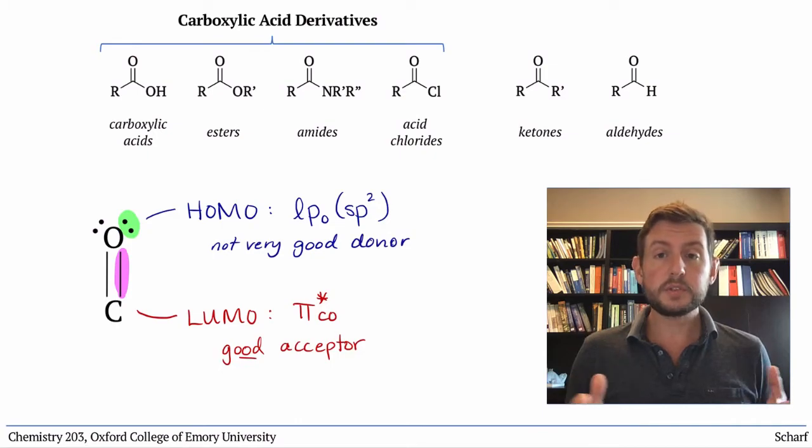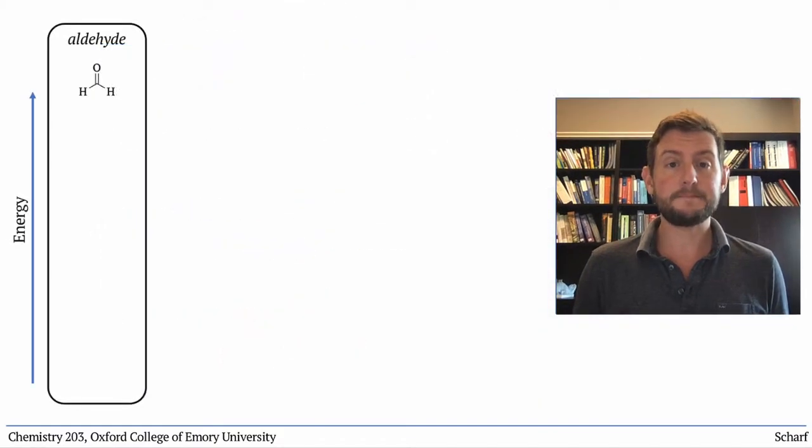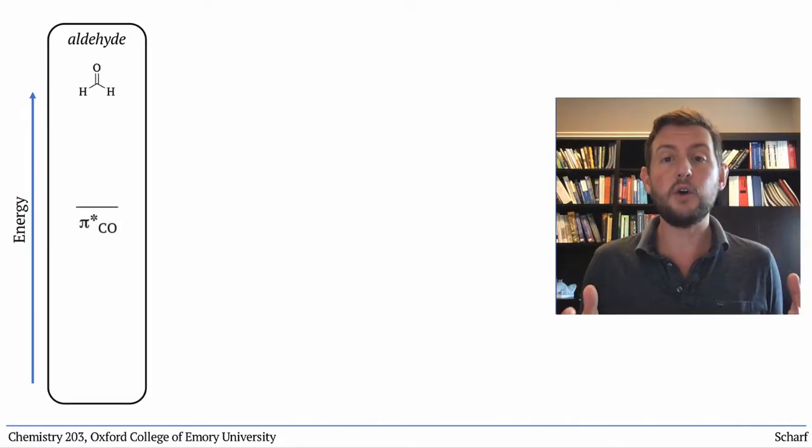Some of these functional groups are more electrophilic than others, though. Let's explain this in terms of molecular orbital energies, starting with the simplest carbonyl containing functional group, the aldehyde. It basically has a naked, plain old CO pi star orbital.